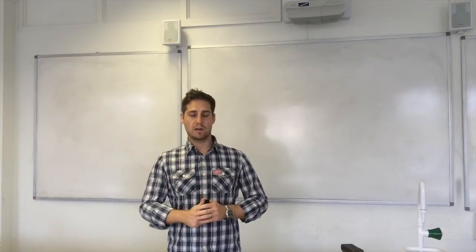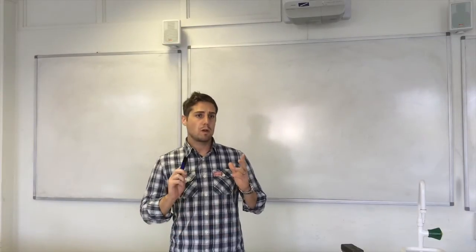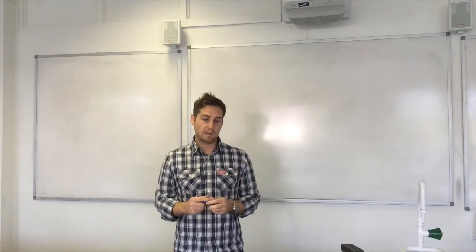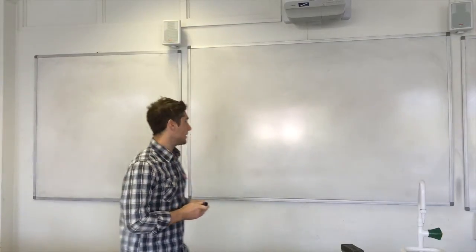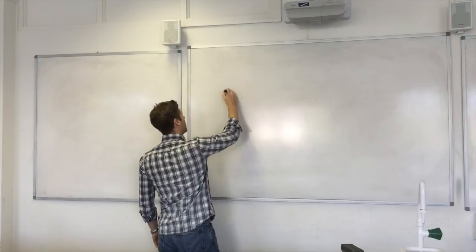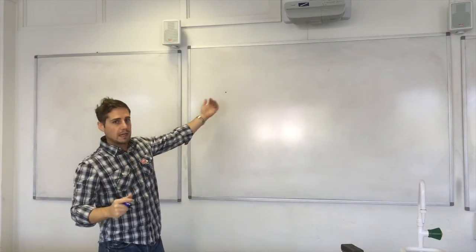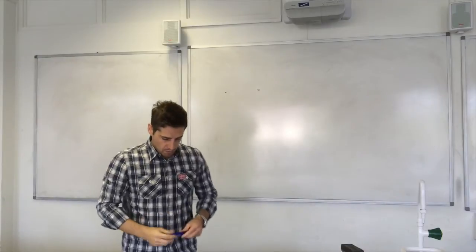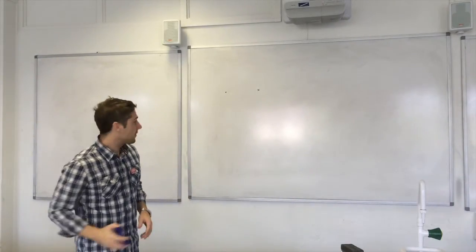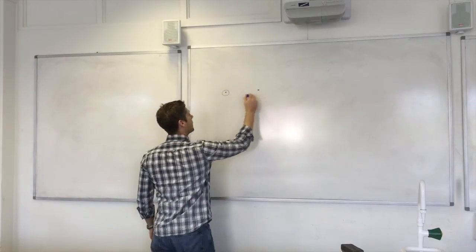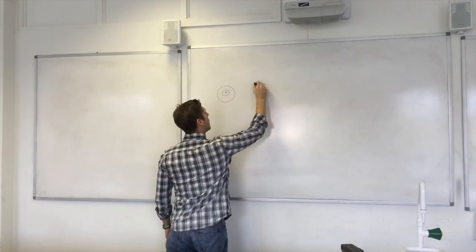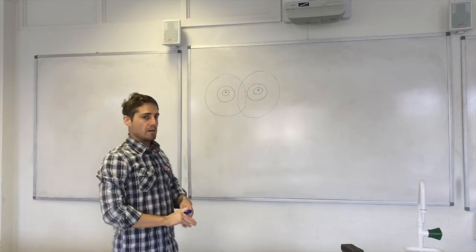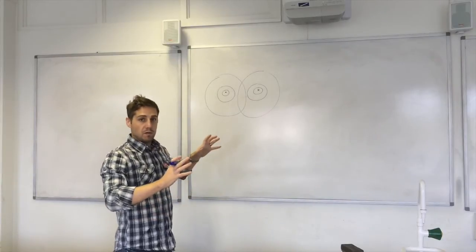Before moving on to transformers, let's cover parallel current-carrying conductors. Consider a wire carrying current out of the board and another carrying current into the board. Both have circular magnetic fields around them — drawing the fields as if the other weren't there, they have their own circular fields which will interact with each other.